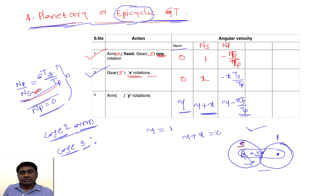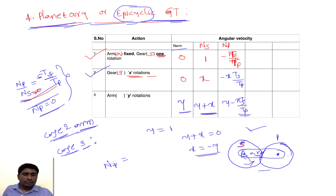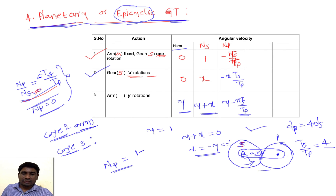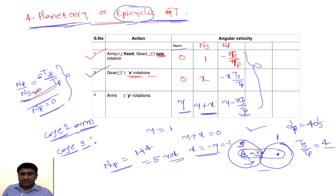With y equal to one and y plus x equal to zero, we get x equal to minus y, which means x equals minus one. And tS/tP equals four. So nP equals y minus x times tS/tP, which gives us 1 minus (minus 1) times 4 equals 1 plus 4 equals five rotations. So nP equals five rotations. In the same manner, however complicated the system is or however many gears are attached, if you follow this same method, you can easily solve the problem.